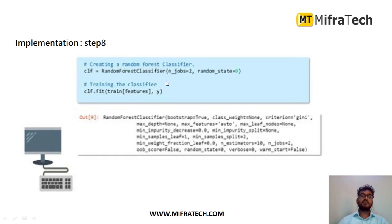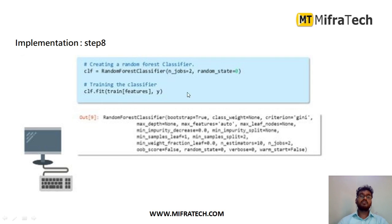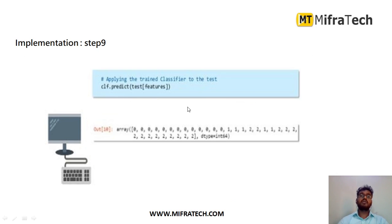Now we use the Random Forest classifier and train it. We assign it as `clf = RandomForestClassifier()`. As you can see in the output, there are a number of parameters we can modify in this algorithm; in this example we keep defaults. To train the model we use `clf.fit(train[features], y)` where features are X and the target is Y. After the model is trained, we predict output on the test data using `clf.predict(test[features])`. The predicted output shows values 0, 1, 2 — where 0 is setosa, 1 is virginica, and 2 is versicolor.